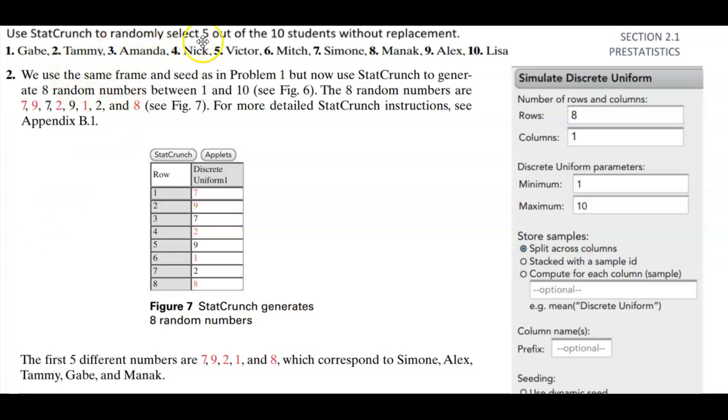We're going to use StatCrunch to randomly select five out of the ten students without replacement. Here are the ten students and we're going to use the same frame and seed as in problem one, but now we're going to use StatCrunch to generate eight random numbers between one and ten, which you're going to see here in figure six.